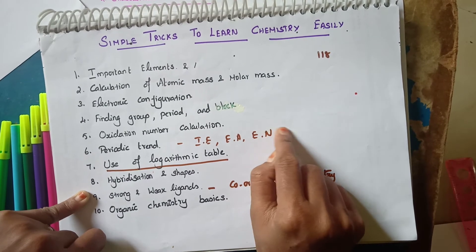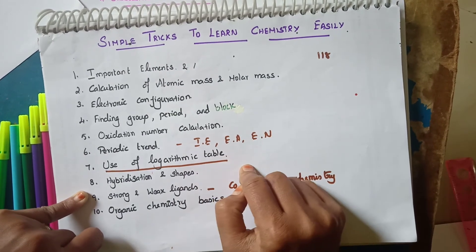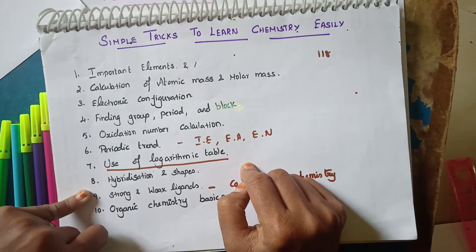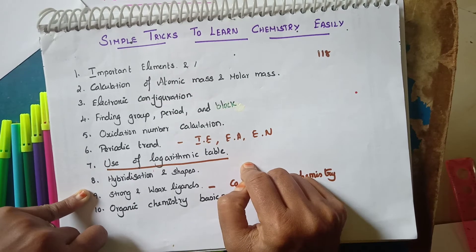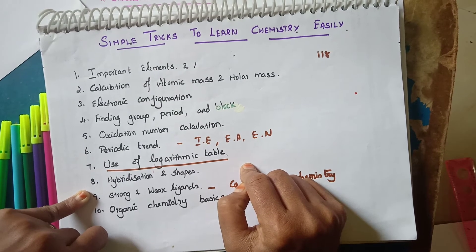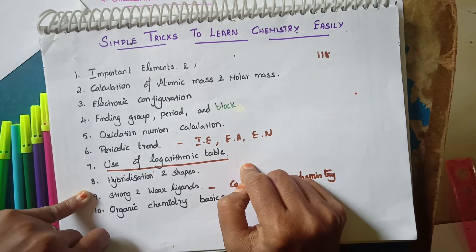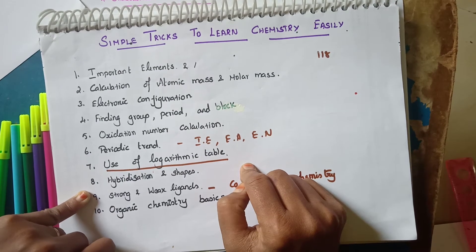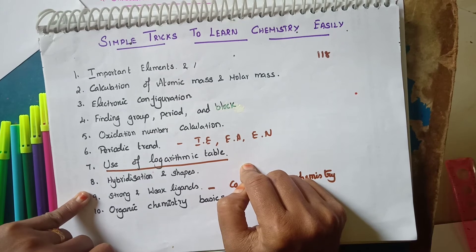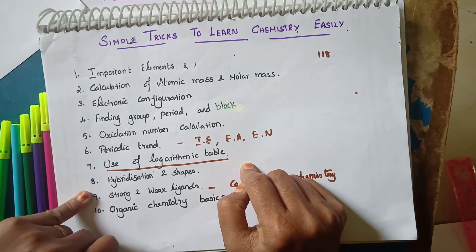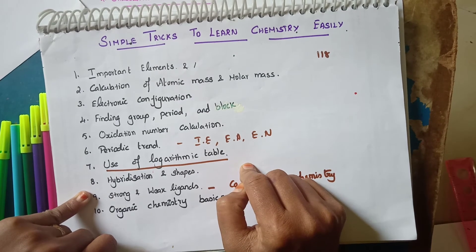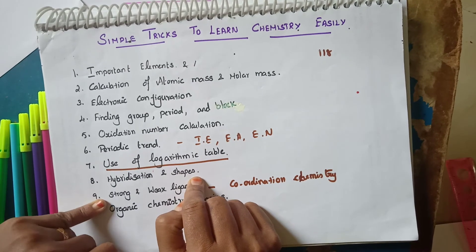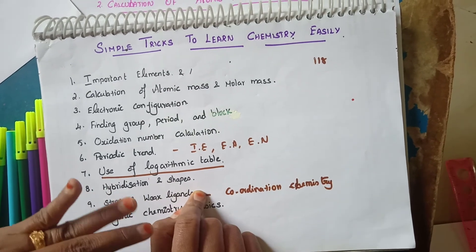The next basic is use of the logarithmic table. In the 11th grade, you will have pH calculations, and without knowing how to use the logarithmic table, you cannot calculate the pH of compounds in the subject.